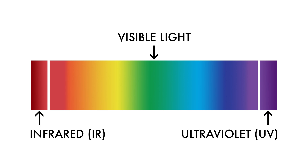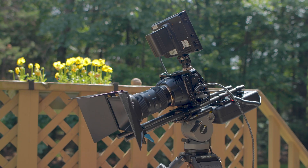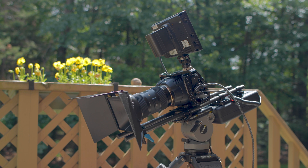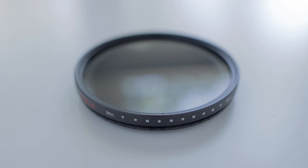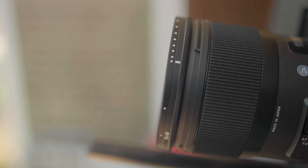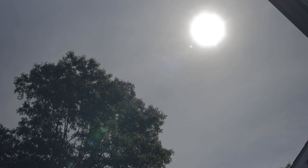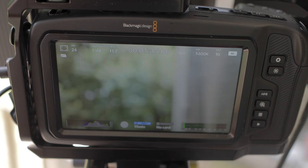Even though we can't see IR light with our eyes, some cameras have a hard time dealing with IR light when we use ND filters on our lenses. ND filters are like sunglasses for our lenses. You'll need them in bright sunlight to have control over shutter speed, ISO, and f-stop to get proper camera exposure.